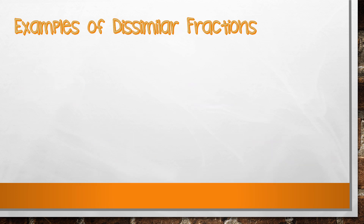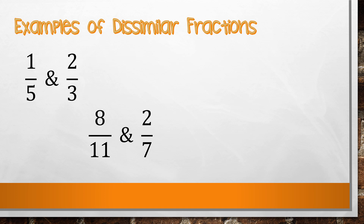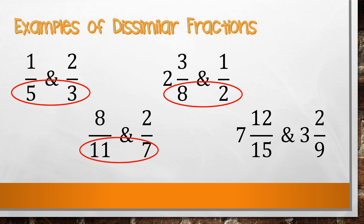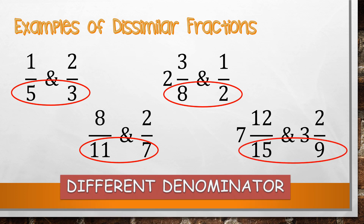Now let us look at examples of dissimilar fractions. Dissimilar fractions have different denominators: 1/5 and 2/3; 8/11 and 2/7; 2 and 3/8 and 1 and 1/2; 7 and 12/15 and 3 and 2/9. These fractions have different denominators, which is why they are considered dissimilar fractions.